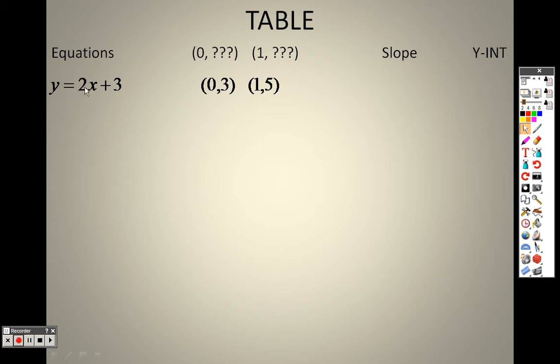If I plug in a 1, 2 times 1 is 2 plus 3 is 5. And if you wanted to think about it that way, if I plug in those two and try to find the slope of it, 5 minus 3 is 2, 1 minus 0 is 1. So 2 over 1 is the slope, which is also the number that's hanging out right in front.